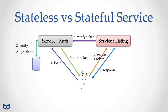What is different about these two services? The listing service has all the information it needs to provide listings. It is stateless — it does not maintain any state. You can restart it or bring up another instance and they all function the same way. This kind of deployment architecture has advantages because you can easily scale stateless services — you can simply create multiple copies of them.